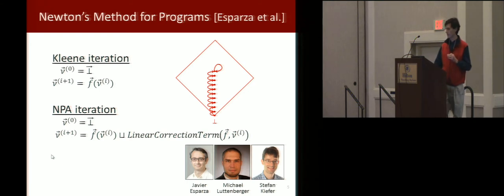I'll say a little bit more about this over the next few slides, but the high-level picture is that Newtonian program analysis is actually very much like Kleene iteration except that there's this added linear correction term, and the effect of linear correction term is to allow you to skip up, to jump up in the lattice at a faster rate.